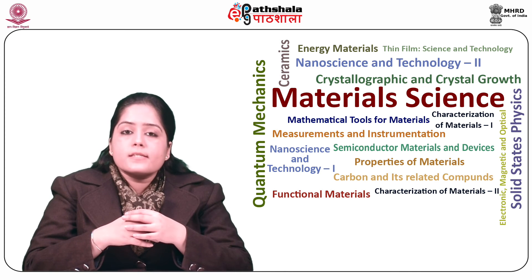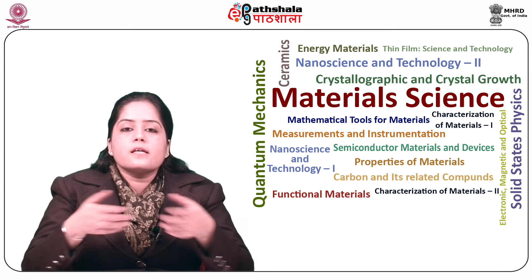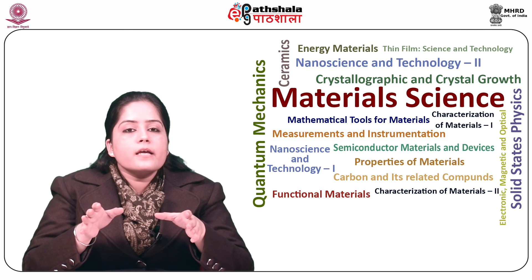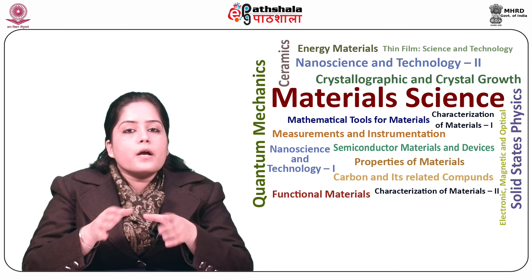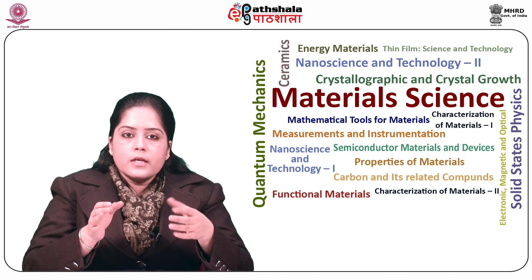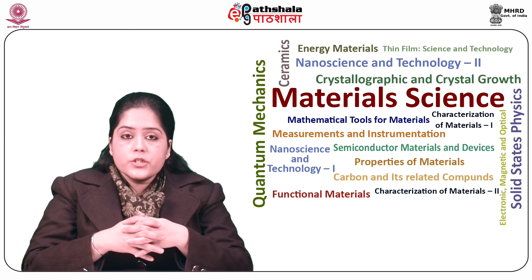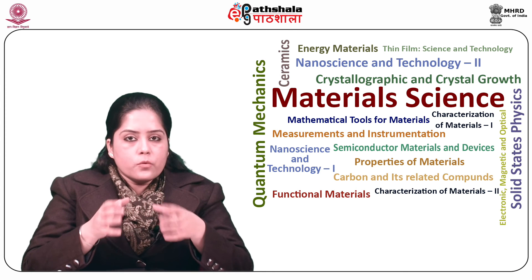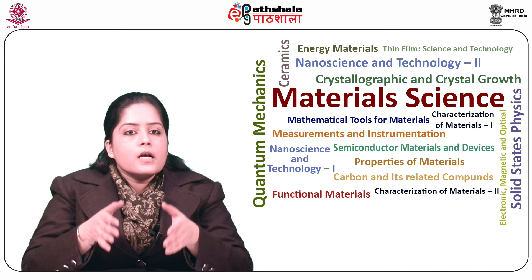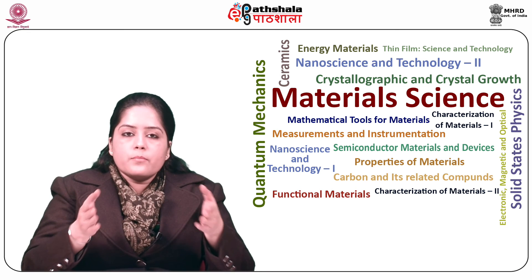The oxide trapped charge Q_OT is associated with defects in SiO2. These charges can be created, for example, by X-ray radiation or high-energy electron bombardment. The traps are distributed inside the oxide layer. Most of the process-related oxide trapped charge can be removed by low temperature annealing. The mobile ionic charge Q_m, such as sodium or other alkali ions, are mobile within the oxide under raised temperature and high electric field operation, and may cause stability problems in a device.